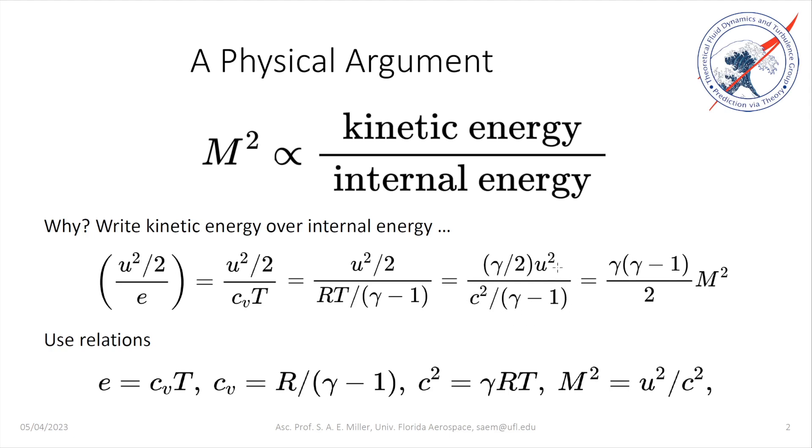We'll then notice we have a value in the numerator as U squared and a value in the denominator, which is C squared. Obviously, M equals U over C, and then M squared equals U squared over C squared. We make the replacement, and now we have the kinetic energy divided by the internal energy goes as gamma times gamma minus 1 over 2 times M squared.